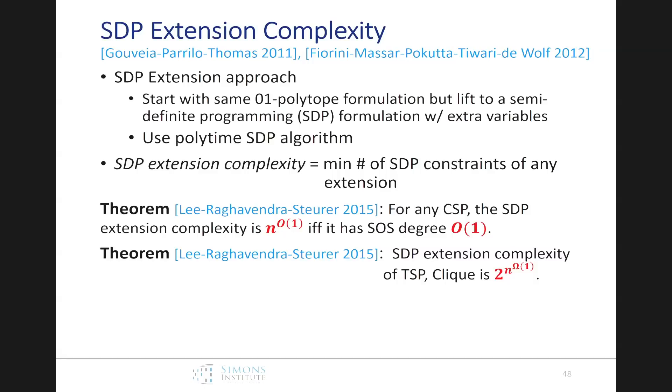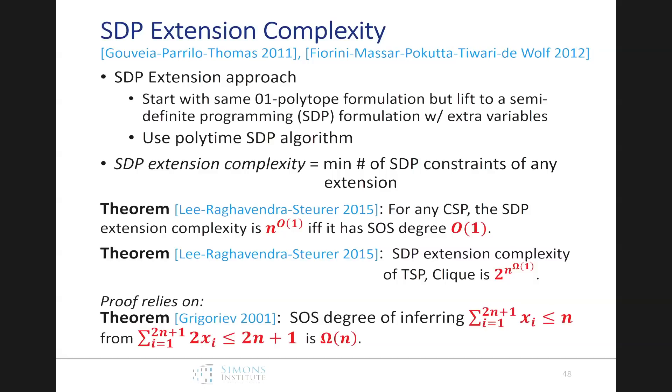Start with the same original formulation, but lift to a semi-definite program, rather than a linear program with extra variables, and use the fact that we have polytime semi-definite programming algorithm. And the SDP extension complexity is the minimum number of SDP constraints of any extension. Well, three years ago, Lee, Raghavendra and Steurer proved that for any couple of results, first, for any CSP, the SDP extension complexity is polynomial if and only if the degree of doing that, of solving that SDP or approximating is also constant. Their theorem actually proved a little bit more, but I'm stating weaker results for all of these than are in the original papers. And the other thing they showed is that the SDP extension complexity of the famous traveling salesman problem, or clique, is two to the n to the epsilon, for some epsilon. And very interestingly, their methods, their proof relies on a result of Grigoriev on something that seems completely unrelated, but is related to the sum of squares.